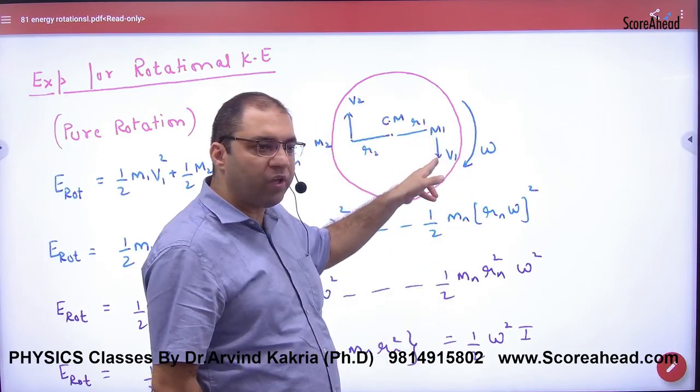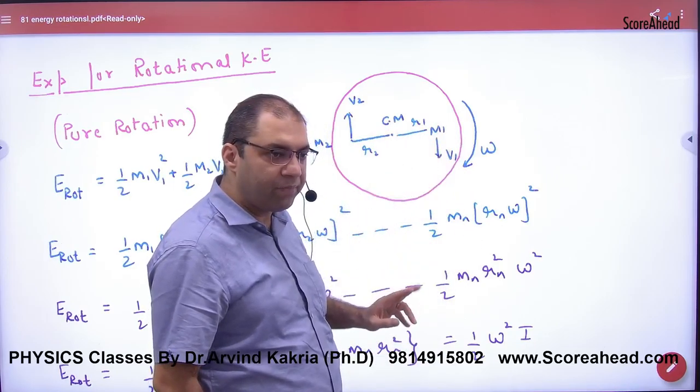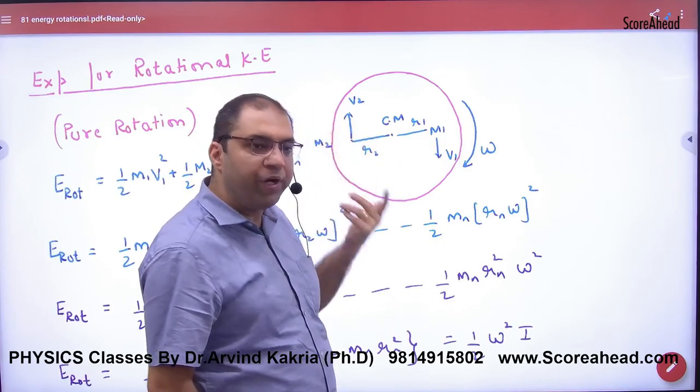So, it will have a tangential velocity V1. What will happen? R1 into omega. What will happen? R2 into omega.